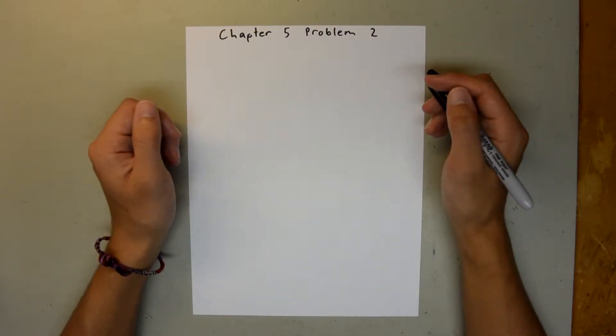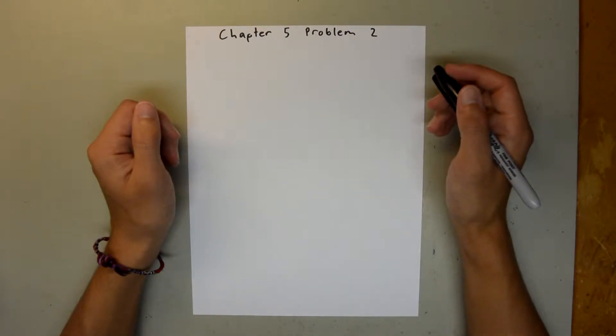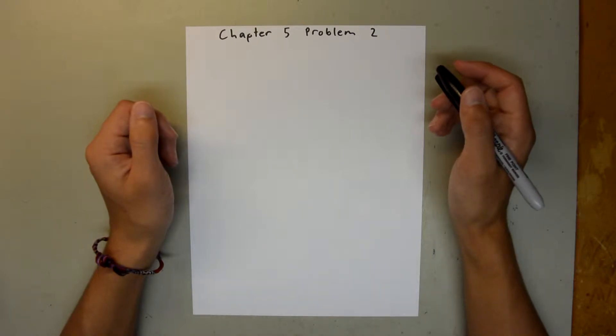And in Problem 2, there's three parts to the question, and each part has two different forces acting on the block. And we are asked to find the acceleration and unit vector notation for each situation.